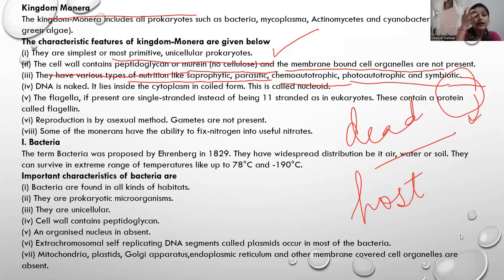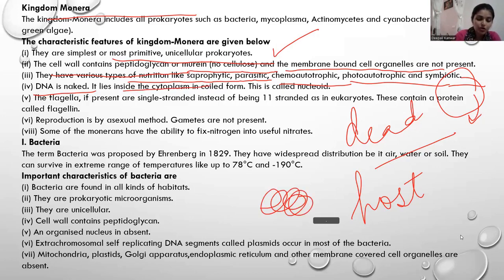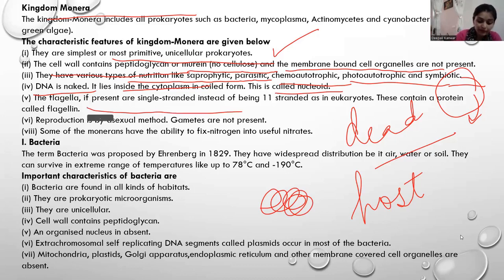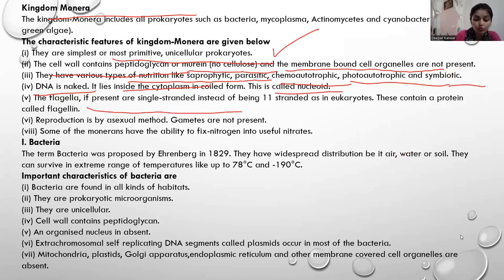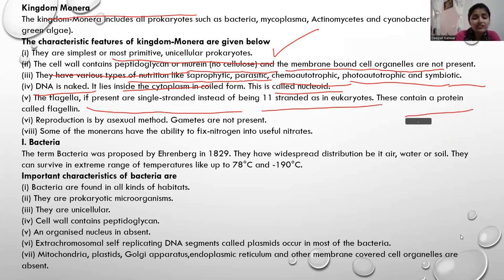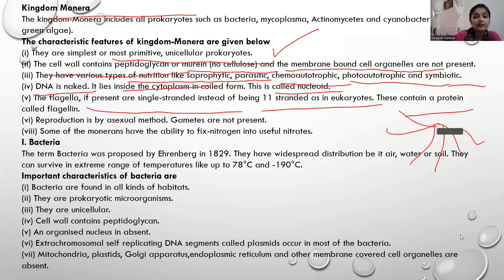DNA is naked and it lies inside the cytoplasm in coiled form — so the DNA is like this, in coil form. This is called the nucleoid, which I have already mentioned to you.